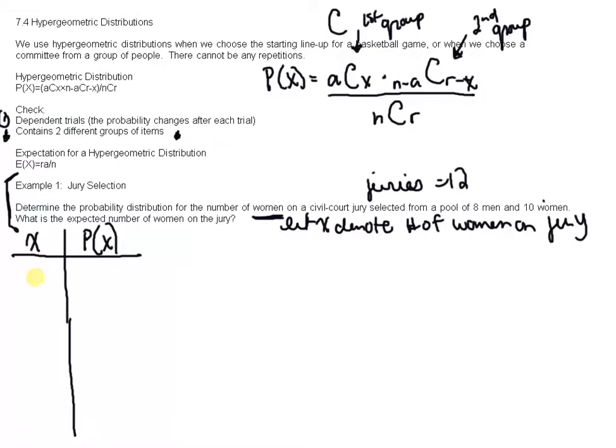Now there couldn't possibly be zero women on the jury because there's only eight men. So minimally there's going to be four women on the jury. You can see that. Or we have five, six, seven.